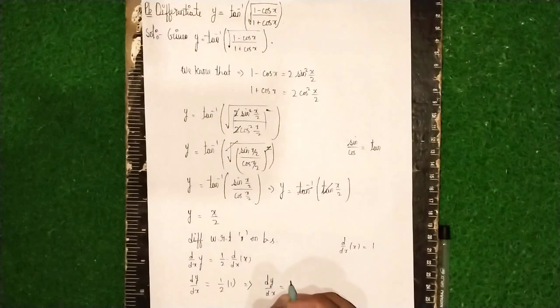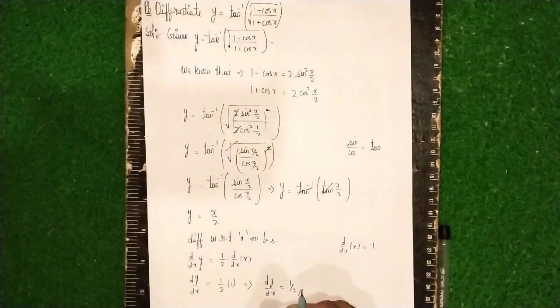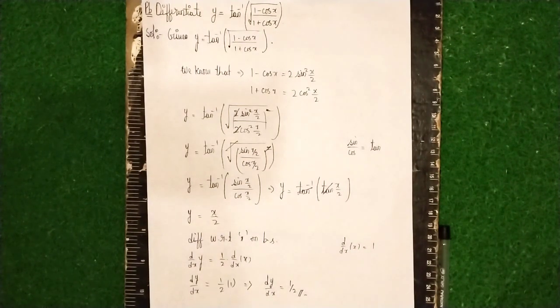So at last our answer is dy by dx is equal to 1 by 2. This is our solution. Thanks for watching.